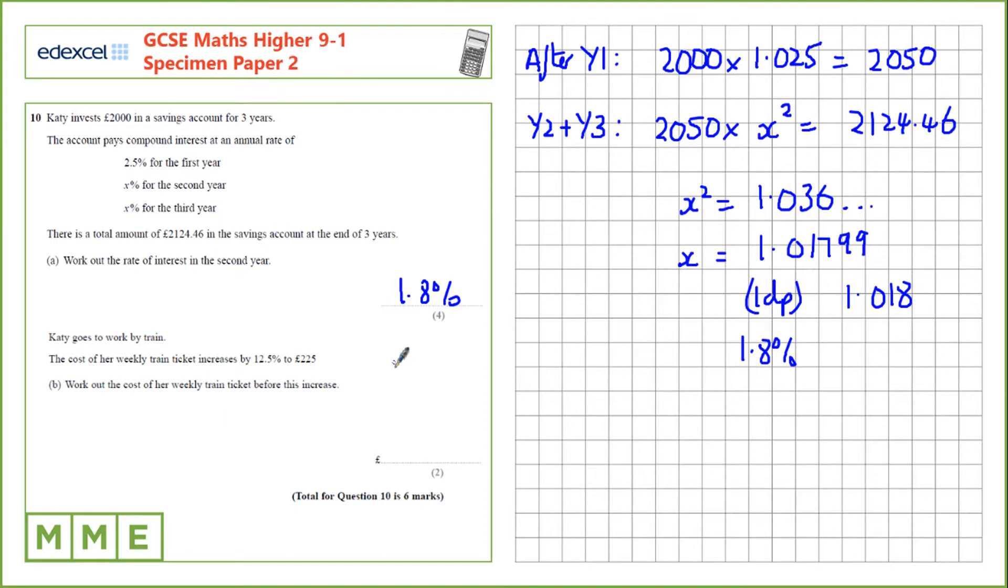Katie goes to work by train. The cost of her weekly train ticket increases by 12.5% to £225. Work out the cost of her weekly train ticket before this increase.